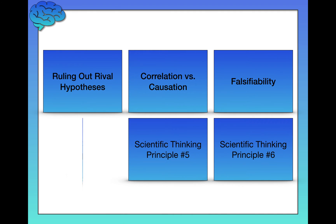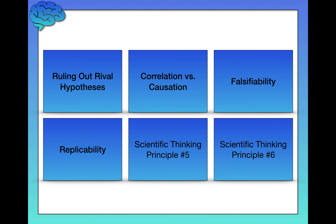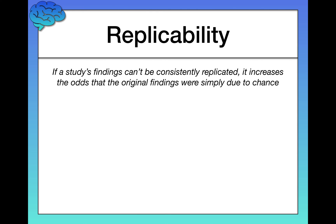Scientific principle number four is replicability. This is a pretty simple but critically important one for science. Replicability states that if a study's findings cannot be consistently replicated, it increases the odds that the original findings were simply due to chance. It's the nature of statistics and science that if you find an effect, there's always a small chance you just got unlucky — there actually is no effect and you observed a randomly extreme result not indicative of the true state of the world. This is why we do studies over and over: if we find the same result three, four, five, or six times, we're much more confident we're looking at a real effect.